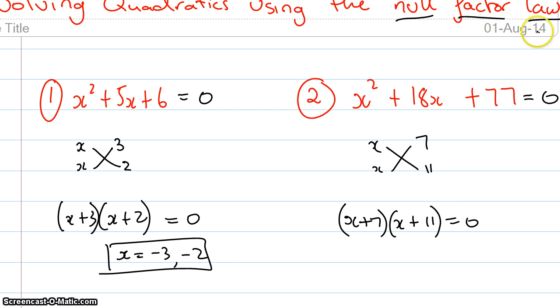Now the null factor law means that if you've got one thing multiplied by another thing and it equals 0, then one of the things must equal 0. In fact in this case both of them actually equal 0 but at different times.